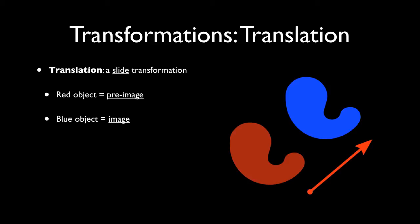In other words, the red is where you start, the blue is where you end up. The arrow is called the translation vector. A vector is an important mathematical idea, and it shows both the direction and the distance of the transformation.